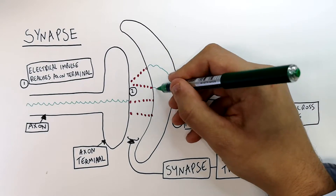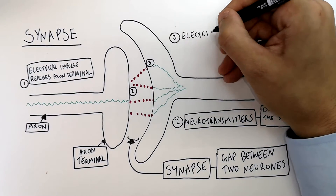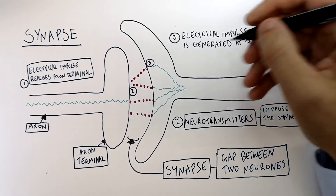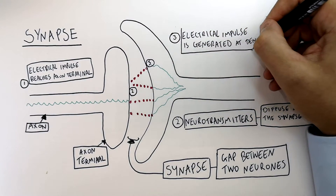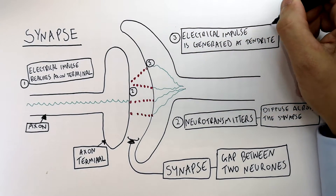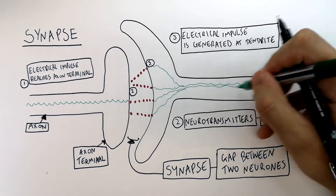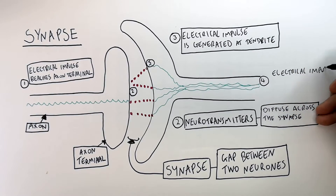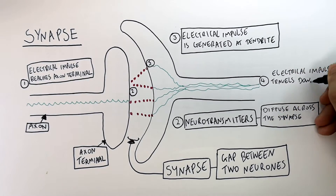Then an electrical impulse is generated in the dendrite of the next neuron. When the electrical impulse is in the neuron, it is then transmitted down the neuron.